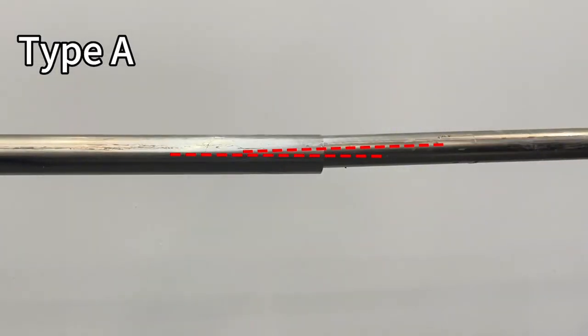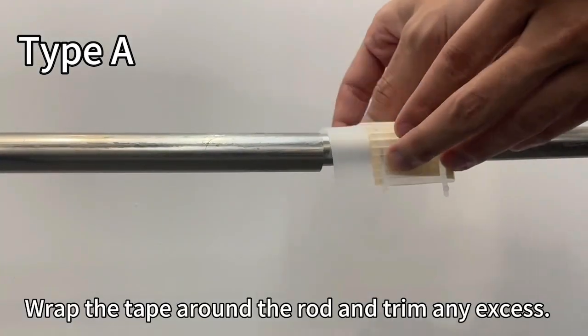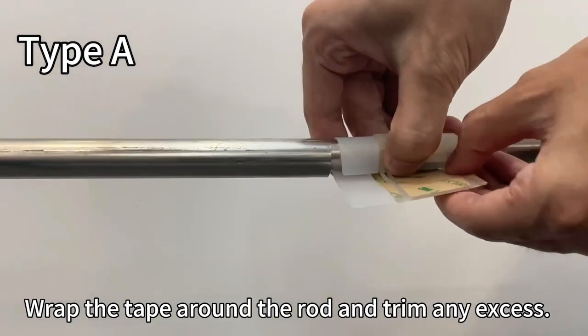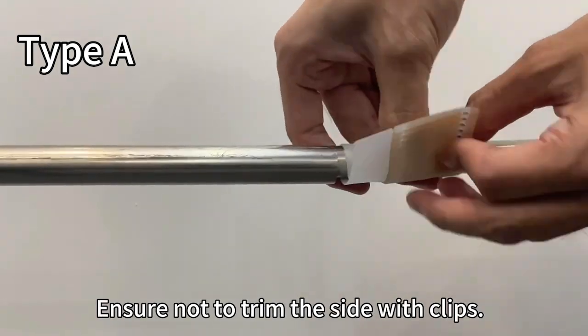Type A. Wrap the tape around the rod and trim any excess. Ensure not to trim the side with clips.